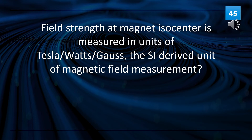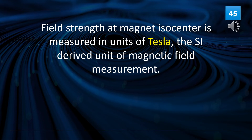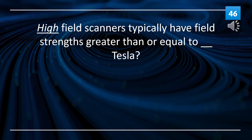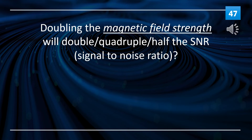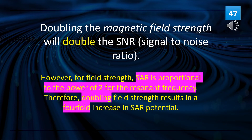Field strength at magnet isocenter is measured in units of Tesla, the SI-derived unit of magnetic field measurement. High field scanners typically have field strengths greater than or equal to 1.5 Tesla. Doubling the magnetic field strength will double the SNR. Note: don't mistake this for SAR — doubling field strength will quadruple SAR.